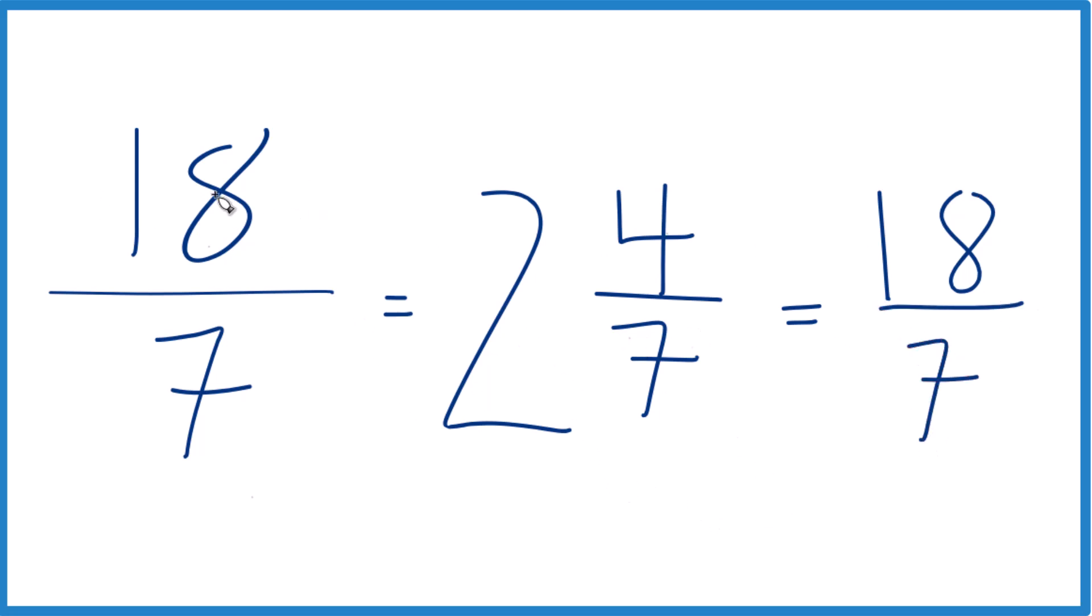That's how you do it. That's how you simplify 18 sevenths. It's already simplified, and if you want it as a mixed number, it's 2 and 4 sevenths. This is Dr. B. Thanks for watching.